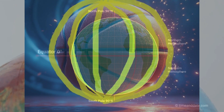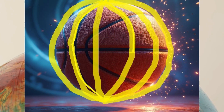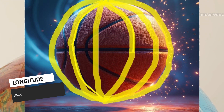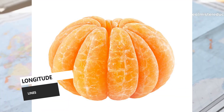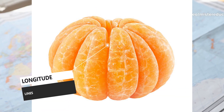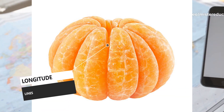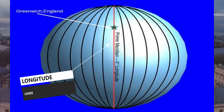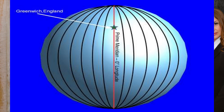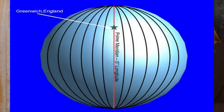Now, the vertical lines — those are longitude lines. They run from the north pole to the south pole, like the segments of an orange. Longitude tells us how far east or west you are from the prime meridian. That's the zero-degree longitude line slicing through Greenwich, England.